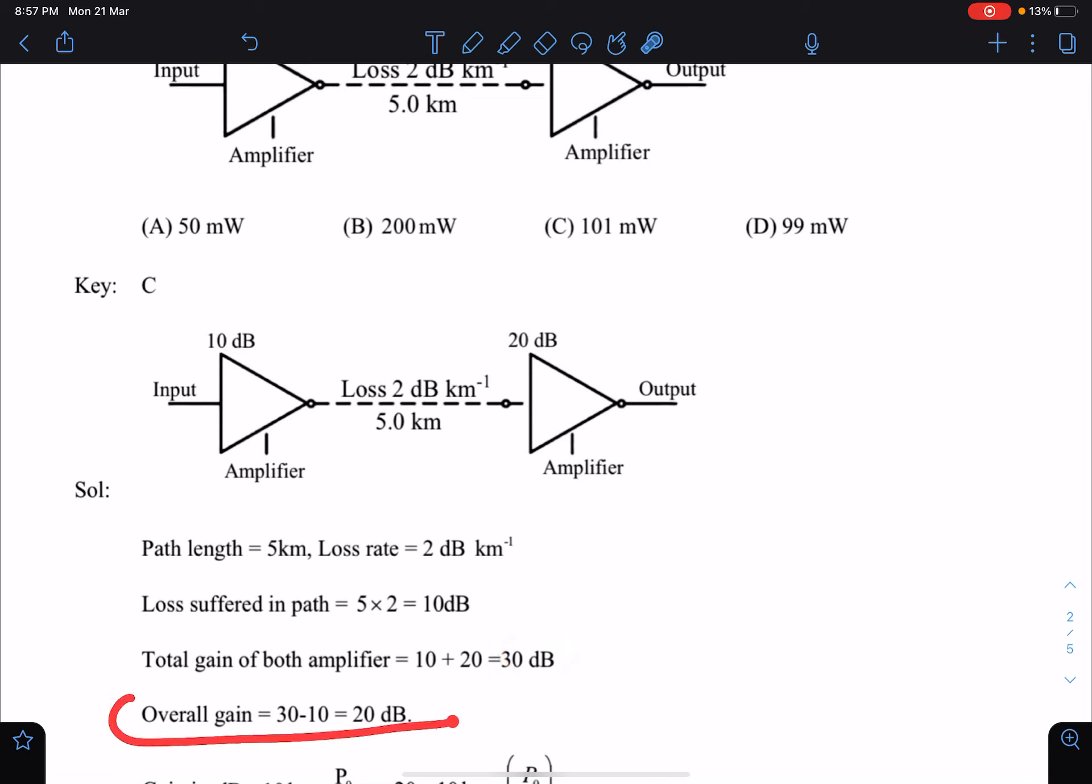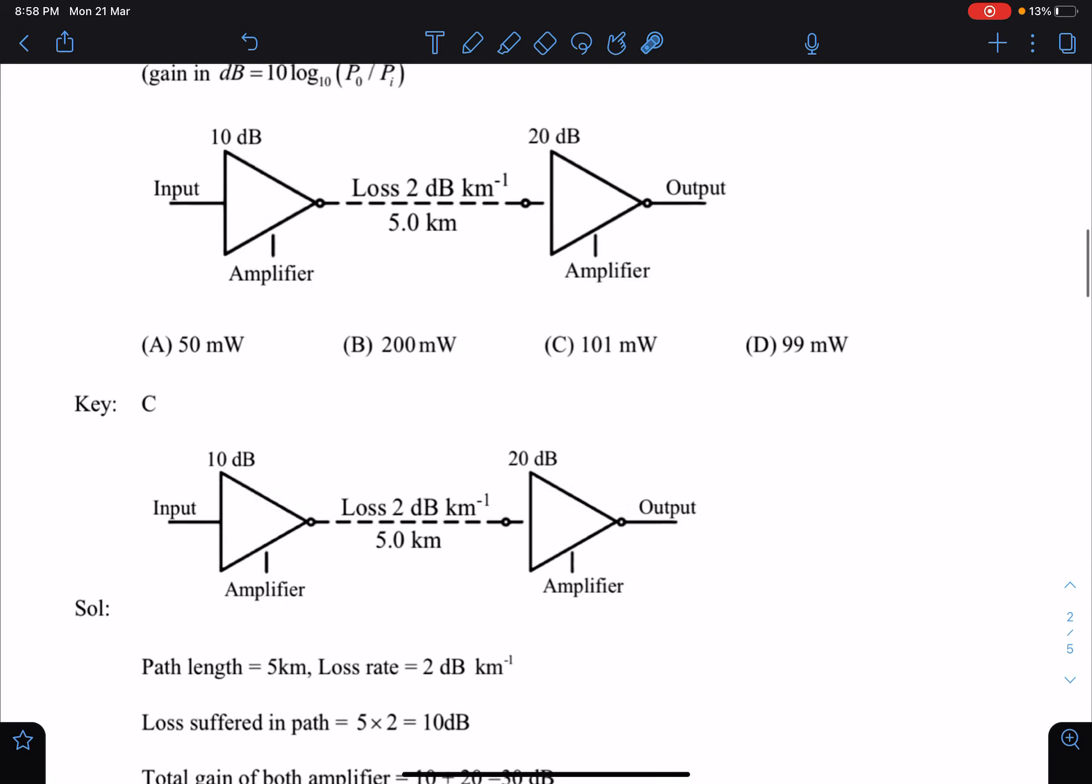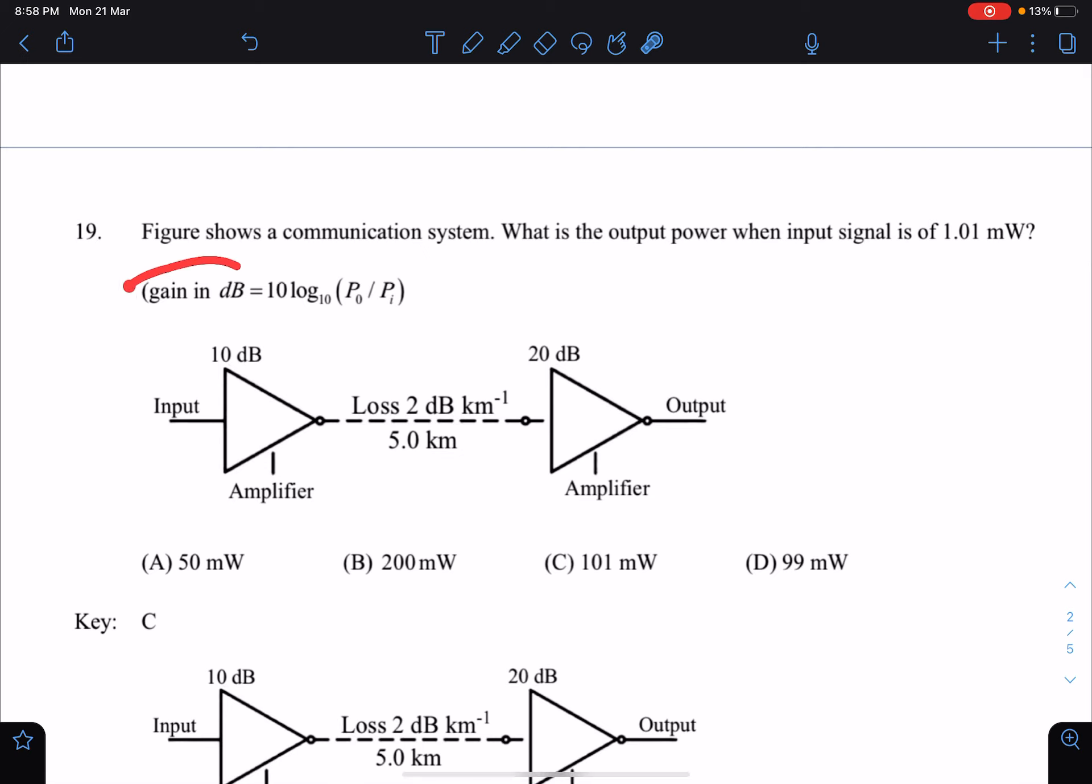Overall gain is total gain minus loss. That is dᵢ + 10 - 10 (due to loss) + 20, so net gain of 20 dB is there. In the problem, this formula is given: gain in decibel = 10 log₁₀(P_out/P_input).